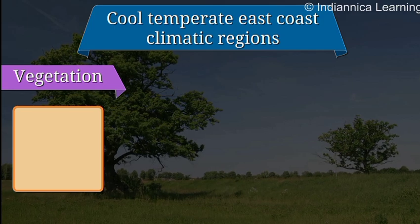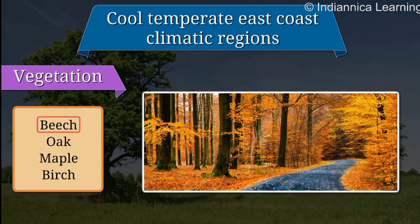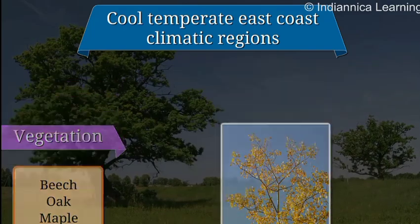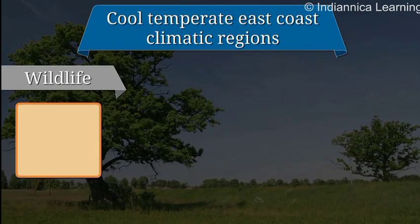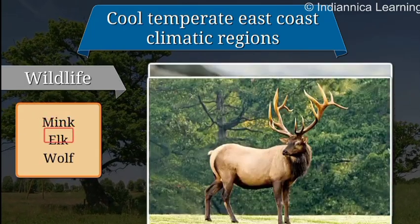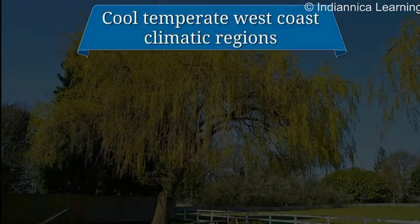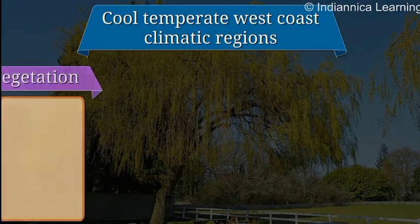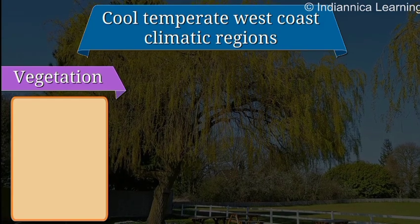Cool temperate East Coast: The regions with the cool temperate East Coast type of climate consist of trees like beech, oak, maple, and birch. The wildlife here includes fur-bearing animals like the mink, elk, and wolf.